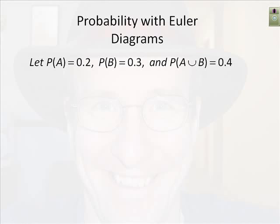Here we start off with some givens about the probability of A, probability of B, and the probability of A or B. We want to use these probabilities and draw an Euler diagram. We're given that the probability of A is equal to 0.2, the probability of event B is 0.3, and the probability of event A or event B is 0.4.